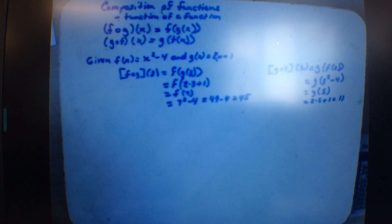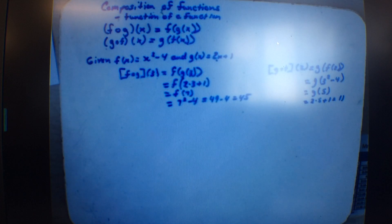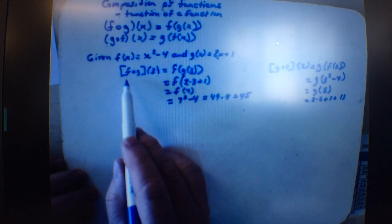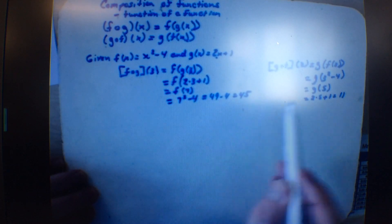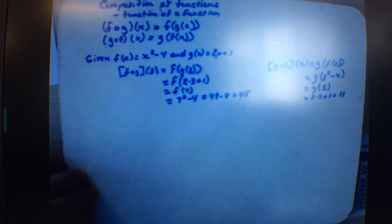So you can see you get two totally different answers depending on which composition you do. It depends on what they ask you — if they ask for f of g of 3, you need that answer; if they ask for g of f, you need the other answer. If they ask for both, you need both.